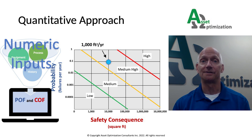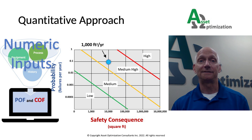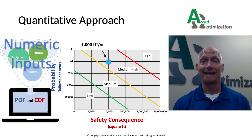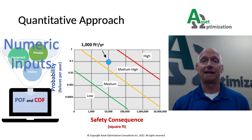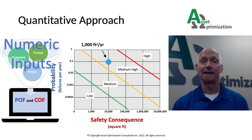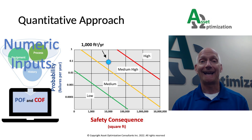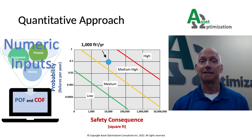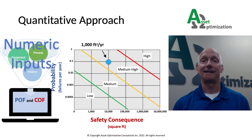Another benefit is the ability to compare risk results for similar equipment or process units. Quantitative risk analysis typically requires dedicated RBI software applications to facilitate the calculation of risk. In this example risk plot, the probability and consequence are represented by numeric values for failures per year and safety affected area. Using this quantitative example RBI methodology, if you had an equipment component with a failure frequency per year of 0.1 and a safety consequence area of 10,000 square feet, as shown by the blue dot on the risk plot, then the safety risk could be defined numerically as the product of those two numbers, or 1,000 square feet per year, or classified as a medium-high risk.